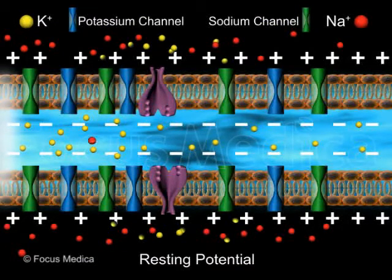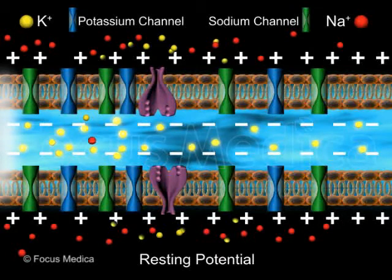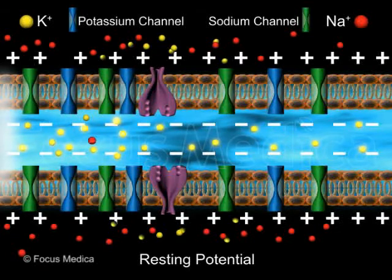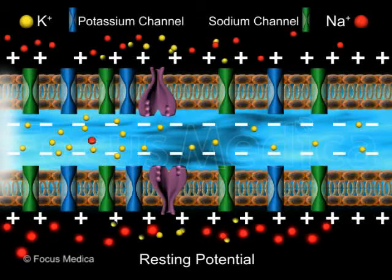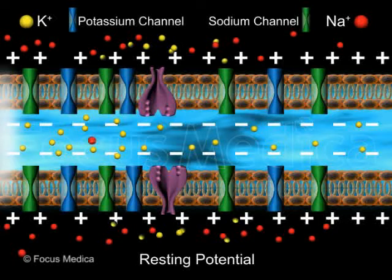Measurement across the membrane shows that about 20 times as much positive potassium ions, K+, are concentrated within the cells as outside the cell. As for positive sodium ions, Na+, there is about 10 times as much sodium outside the cell as inside.